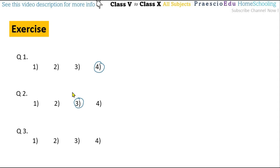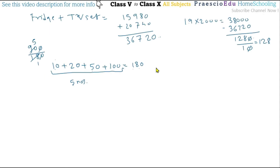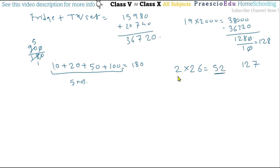Question number three: Manoj has 26 notes of rupees 2 and some rupees 5 notes. So 2 multiplied by 26 equals 52 rupees — that is the value of the rupees 2 notes. The total amount with him is rupees 127, and the quantity of rupees 5 notes is not given. We subtract: 127 minus 52 equals 75 rupees, which is the total value of the rupees 5 notes.